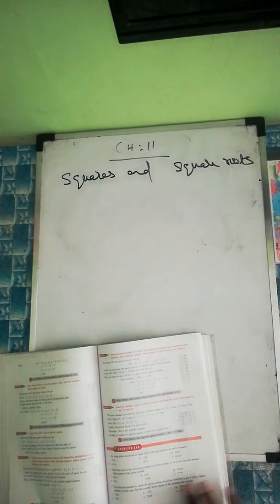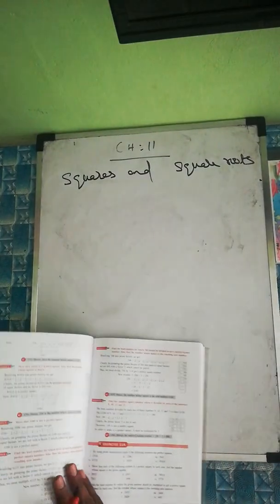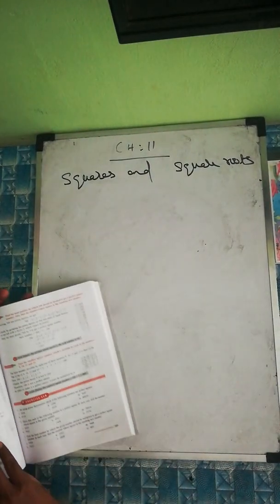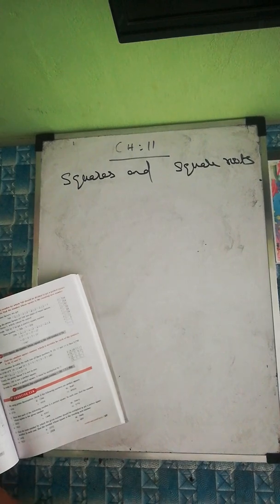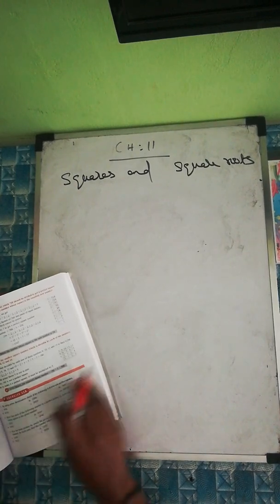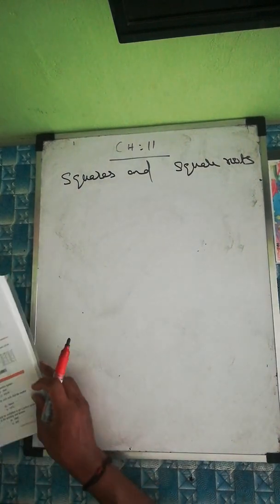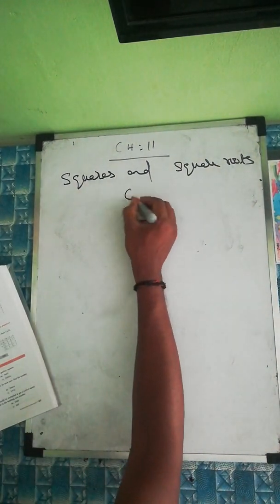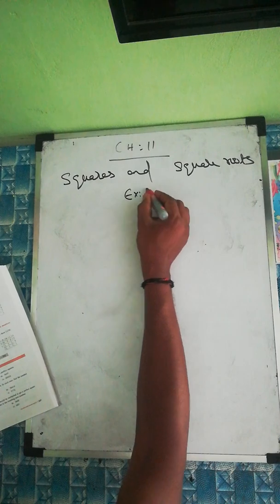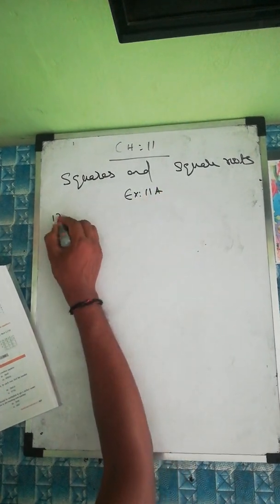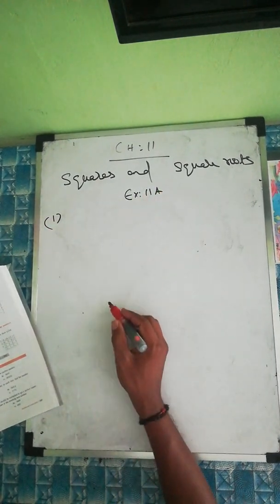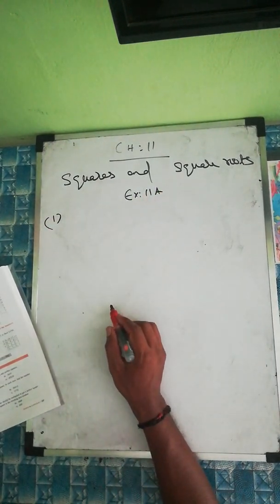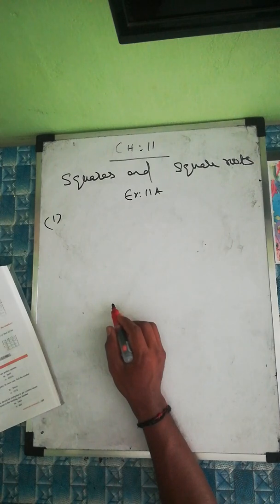Chapter 11 - Squares and Square Roots. We'll start Exercise 11a here. The first question: by using prime factorization, check if the following numbers are perfect squares or not.